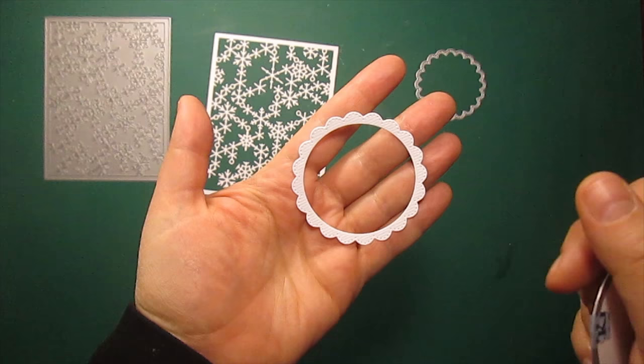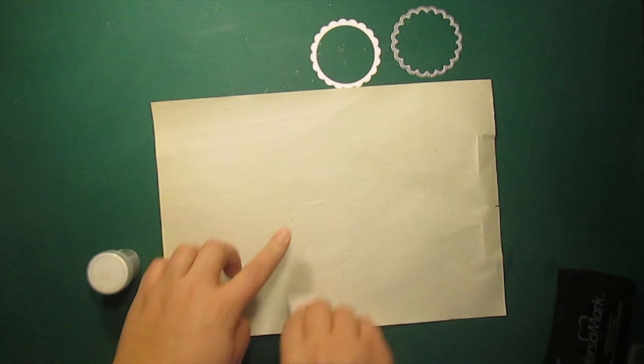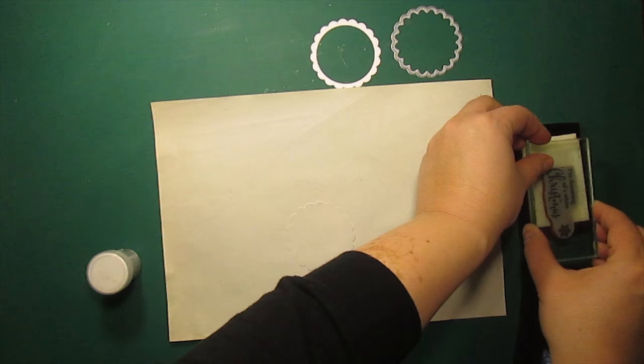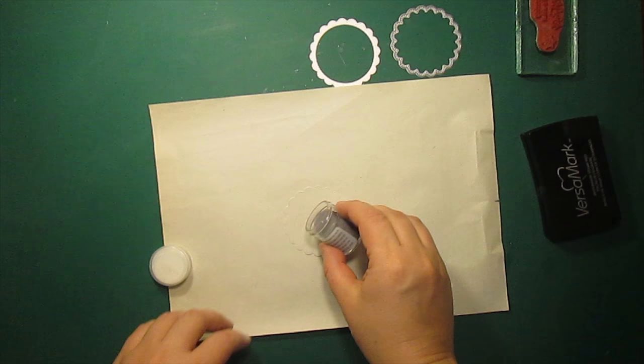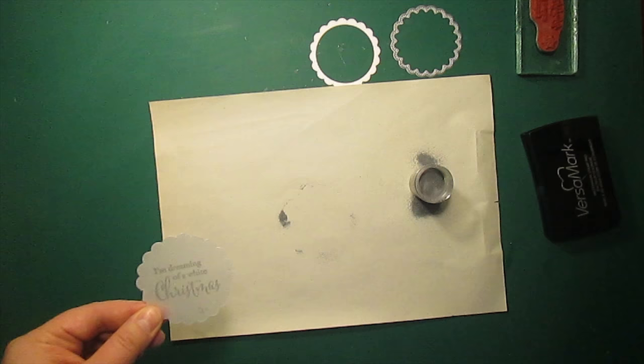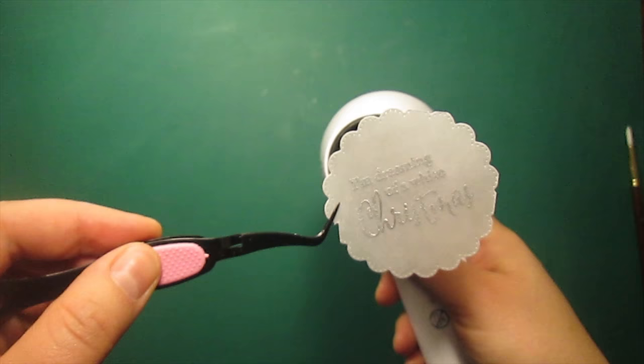I've die-cut the same scalloped circle out of vellum and now I'm going to silver emboss my sentiment. I'm using VersaFine clear embossing ink and silver embossing powder by WOW. All the supplies I'm using are listed on my blog. The link is in the description for this video. Sweeping off the excess powder with a brush and then heat setting it.